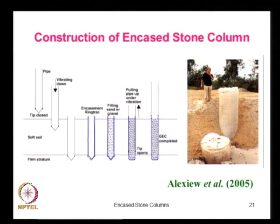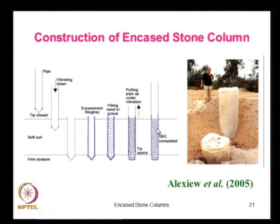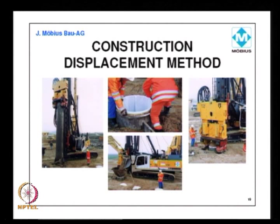The construction methodology works as follows: we lower a hollow pipe by either vibration or water jetting, then introduce a geosynthetic tube — in this case, a geotextile tube — fill it with sand or gravel, then pull up the hollow tube by vibration. This forms a column of granular material encased by a geosynthetic tube. This method was employed at several places, most notably at Hamburg for the construction of the Airbus A380 factory. This construction method is called the displacement method, because we drive a steel tube to displace the soil.